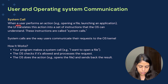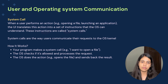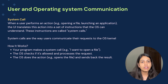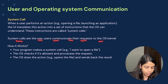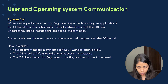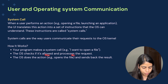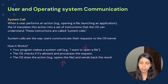Now, what is a system call? When a user performs an action — for example, opening a file or launching an application — the UI translates this action into a set of instructions that the OS can understand. These instructions are called system calls. System calls are the way the user communicates their request to the OS kernel, which is the core component managing process management, memory management, device communication, and other things. How it works: your program makes a system call, for example 'I want to open a file.' The OS checks if it's allowed, processes the request, performs the action — opens the file — and sends back the result. This is done via the system call.